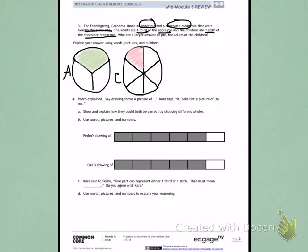Looking back at my question, I'm being asked who ate the larger amount of pie, the adults or the children? And again, I have to use words, pictures, and numbers. So I can go ahead and use numbers to label each portion of the pie. I've already used pictures to label.